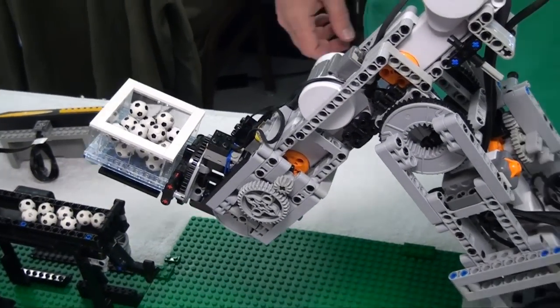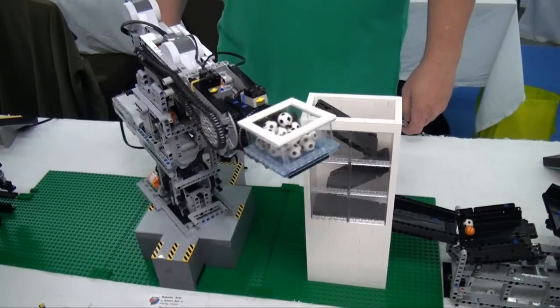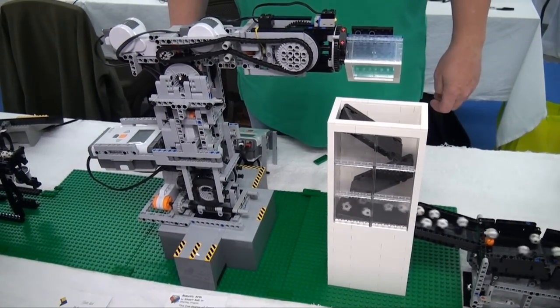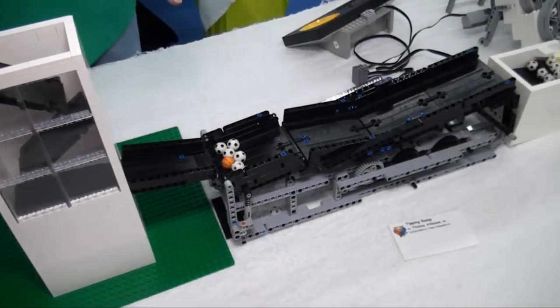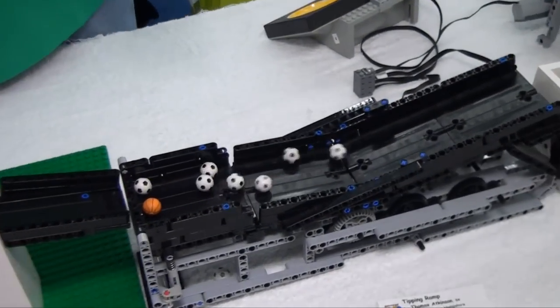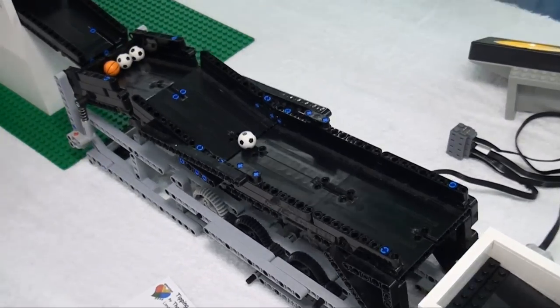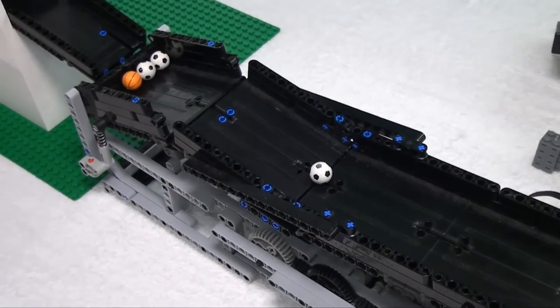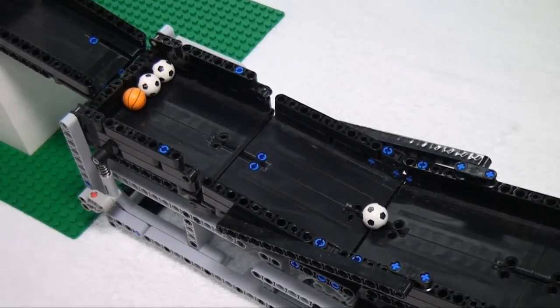From there, once this just dumps it into this big rectangular thing that just kind of filters the balls down in a way to use up that energy. And then we go on to a very slow tipping module, which gravity is doing the work here most of the time. And this is very slow, but it handles small batches of balls.